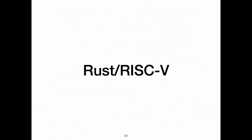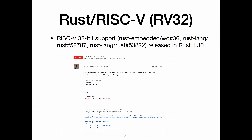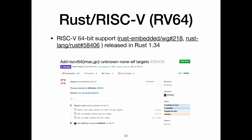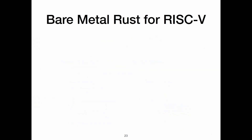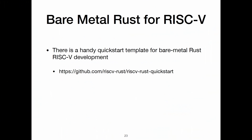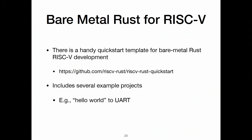What's the status of Rust on RISC-V? There's been a lot of progress in the last year. There is now support for 32-bit Rust RISC-V bare metal, which went in late last year. And just a month ago, there's now bare metal support for RV64. So if you want to do bare metal hacking on Rust, you can do that now. There is a handy quick start template for doing bare metal RISC-V development — you can target the HiFive1, the Kendryte board, and also QEMU. It includes several example projects — Hello World, blink some LEDs, and things like that.